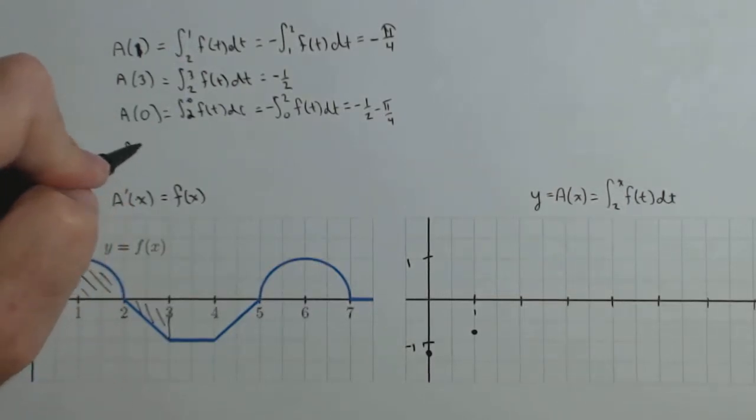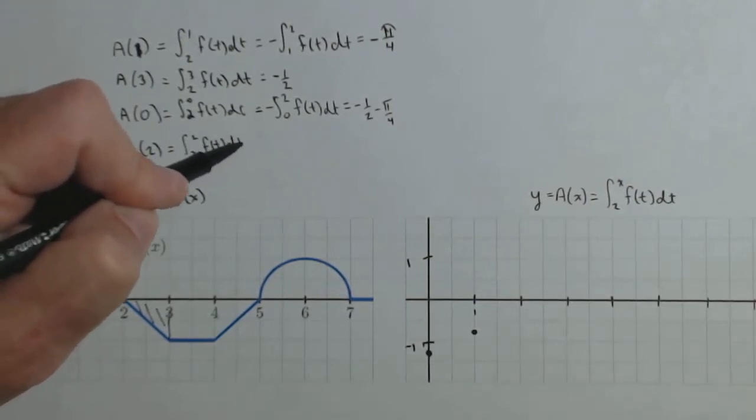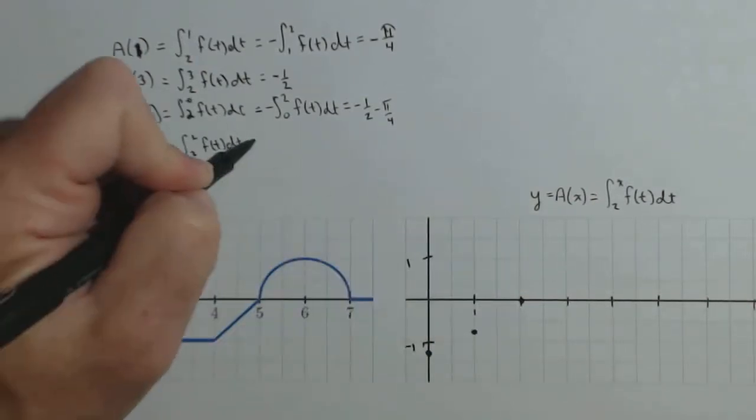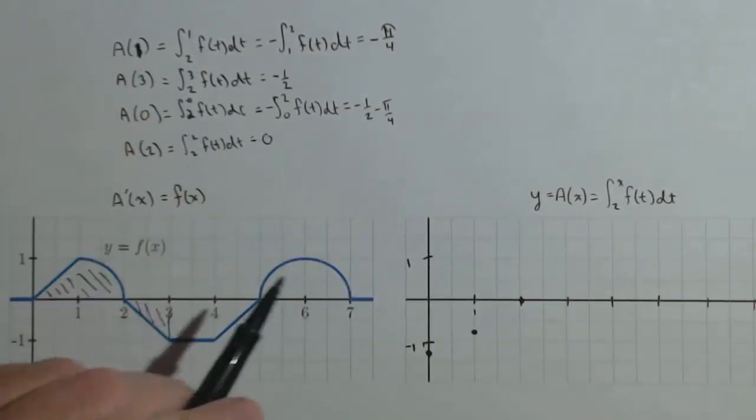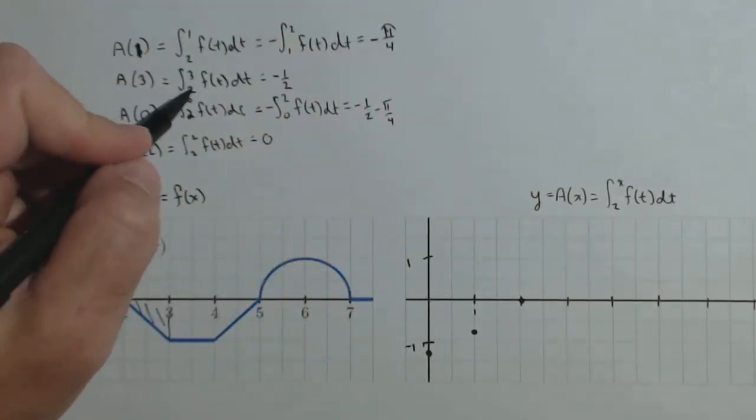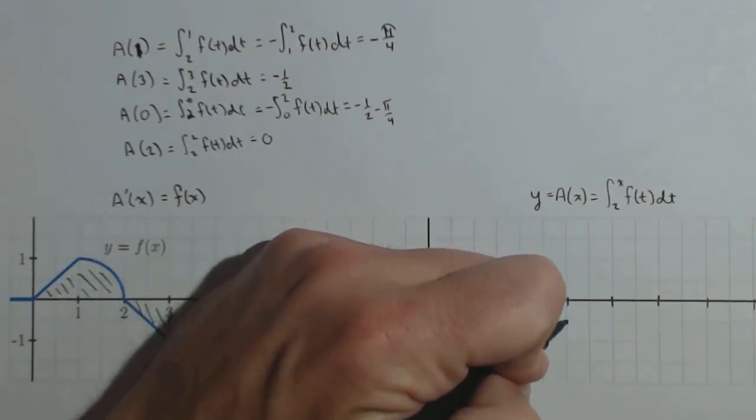Let's go find a(2). A(2) is an easy one because it's 2 to 2 of f(t)dt. Once those limits are the same, it no longer matters what your function is. Automatically it is 0. So we can put that point in. A(3) we've already found. It's negative 1 half. So that's about right here.